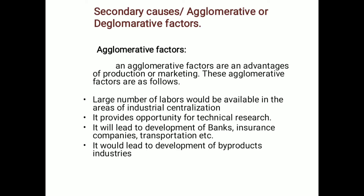Secondary causes, or agglomerative and de-agglomerative factors, are next. Agglomerative factors are advantages of production or marketing. The first advantage is that a large number of laborers would be available in areas of industrial centralization.